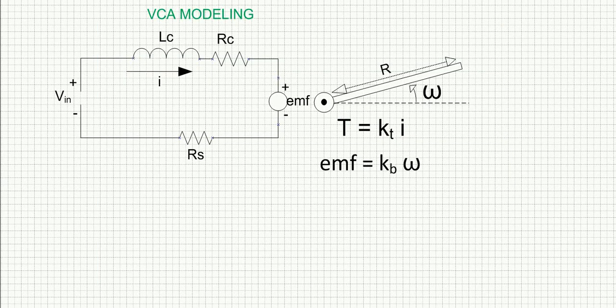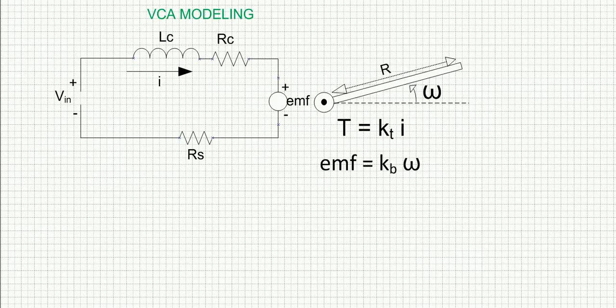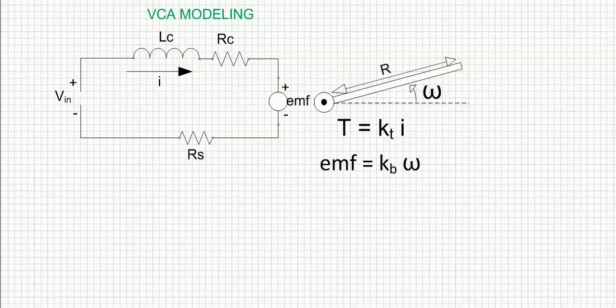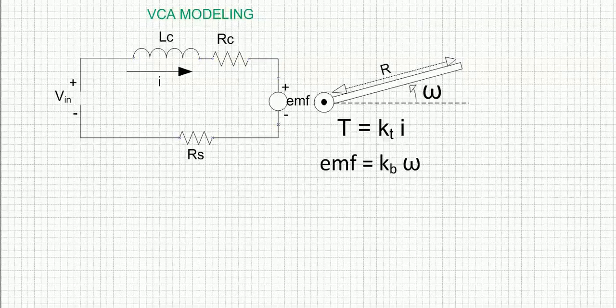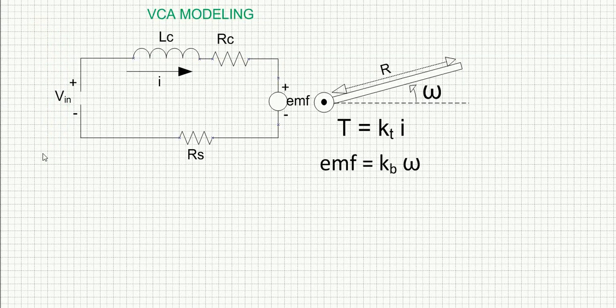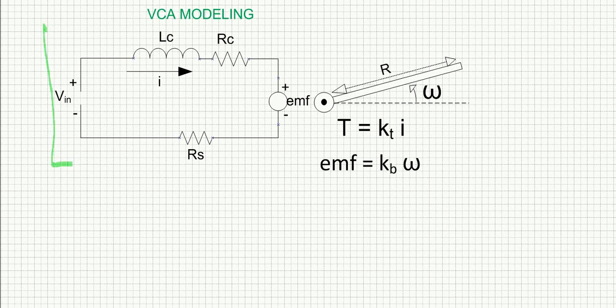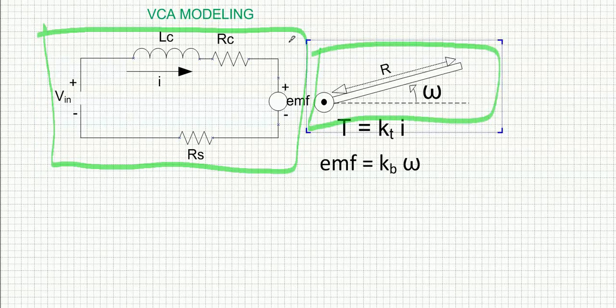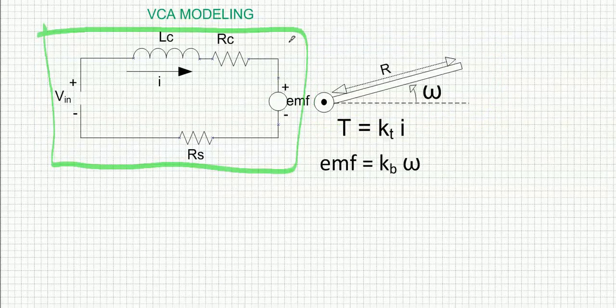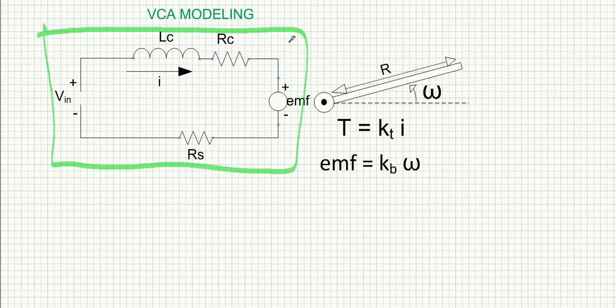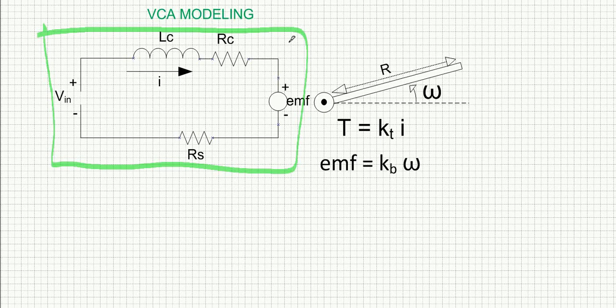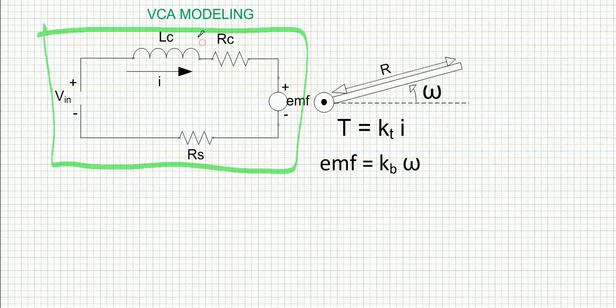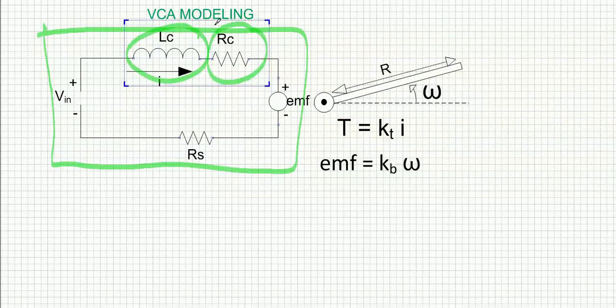Our next step is to find the mathematical model we are going to use for the design of the robust controller. We know that the VCA, the voice coil actuator, is an electromechanical system. As such it has two parts: the electrical part which is here on the left, and we know that the coil is immersed in a magnetic field produced by a permanent magnet.